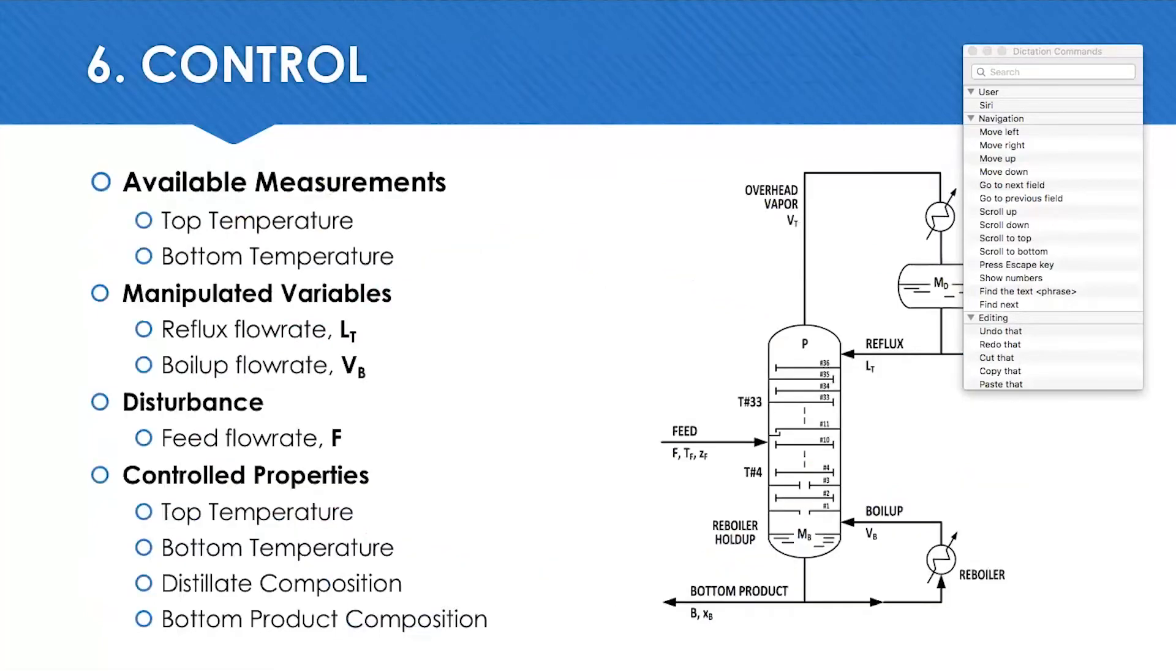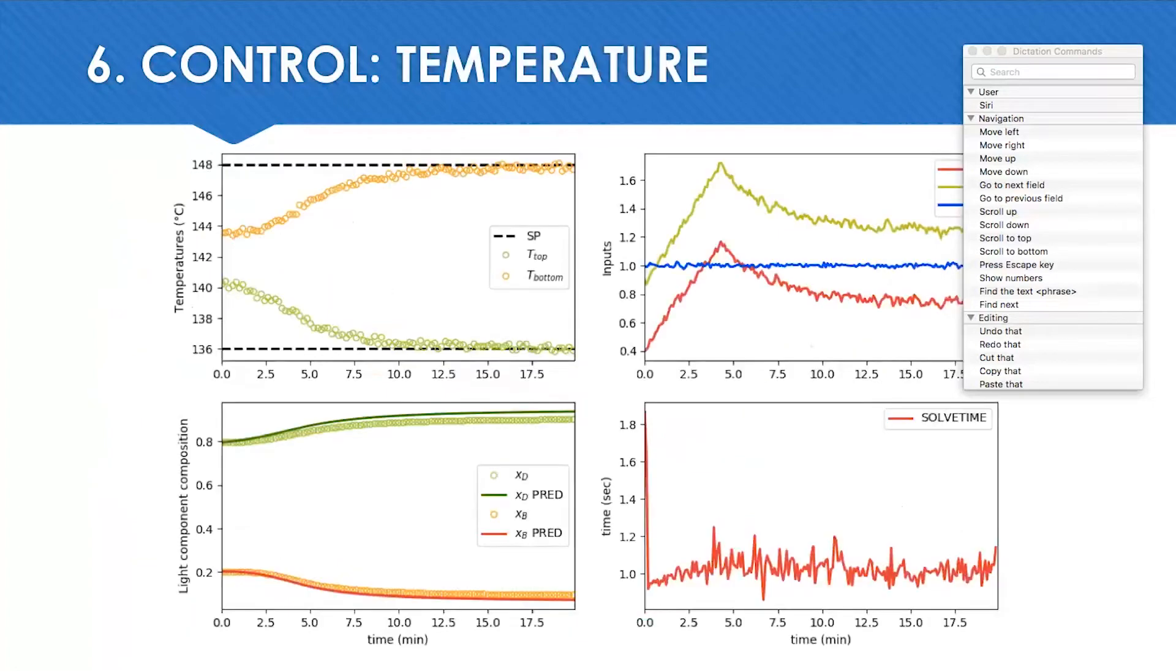This is the sensitivity analysis relating how the change in the manipulated variables affect the control variables. And here is a summary of the control part. The top temperature and the bottom temperature are available measurements as well. The reflux and boil-up are manipulated by the MPC. Feed is a disturbance. And then we can control with the MPC the top and bottom temperatures, and also the distillate composition and bottom product composition. When we configure the model to control the temperatures, we can see that it manipulates the reflux and boil-up to do so. And the average time to solve each cycle was about one second.